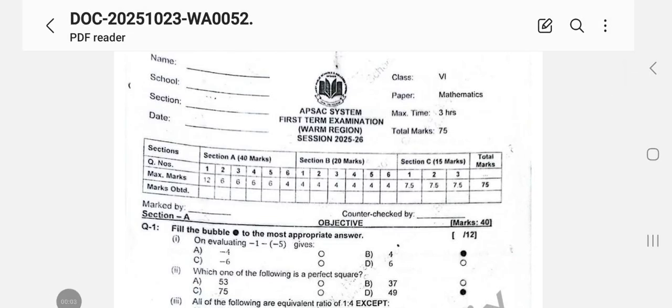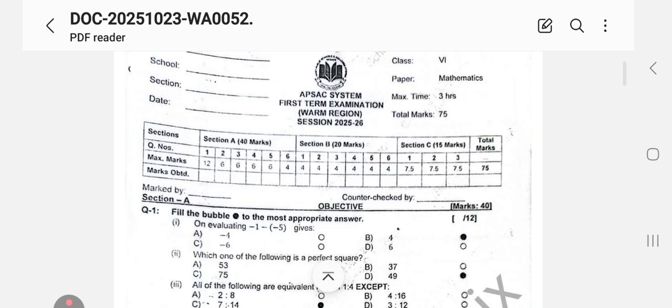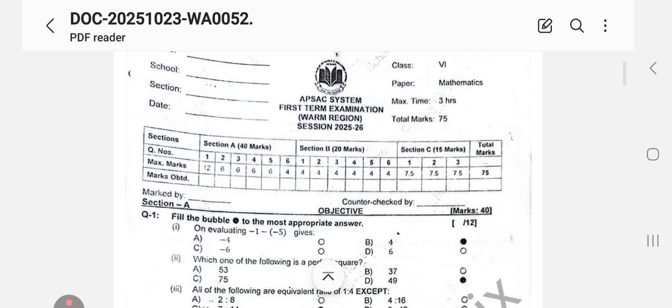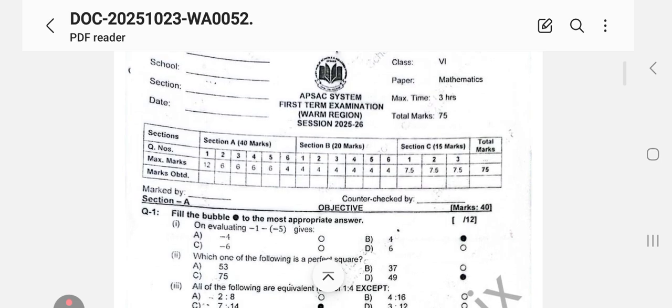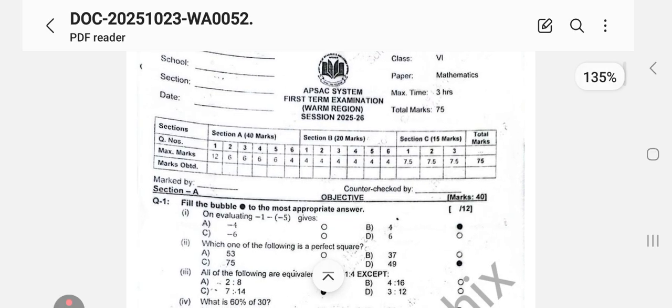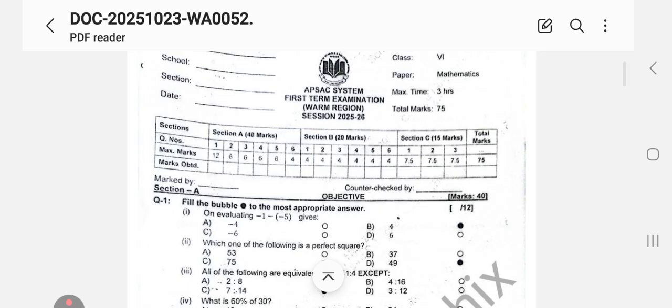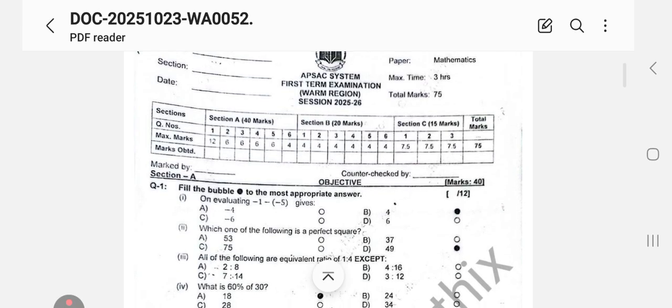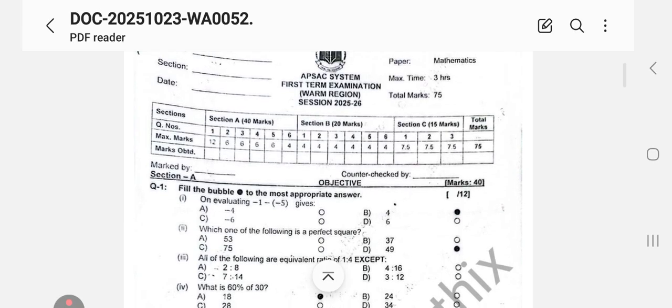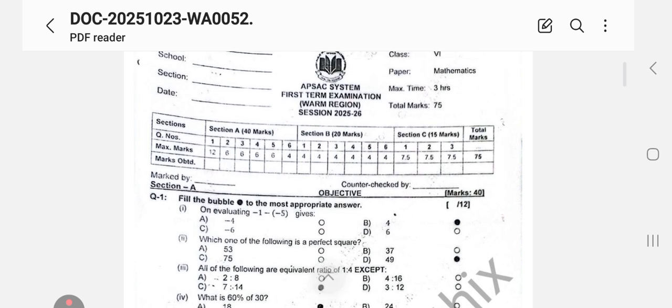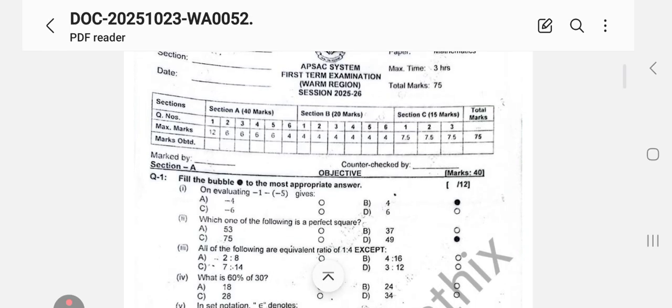Assalamu alaikum dear students, hope you all are fine. Welcome back to my channel. I'm sharing Class 6 AKF Mathematics APSF First Term Examination Warm Region Session 2025-26. The total marks of the paper are 75: Section A is 40 marks, Section B is 20 marks, Section C is 15 marks, as already explained in the marking scheme. Hopefully your paper went very well.